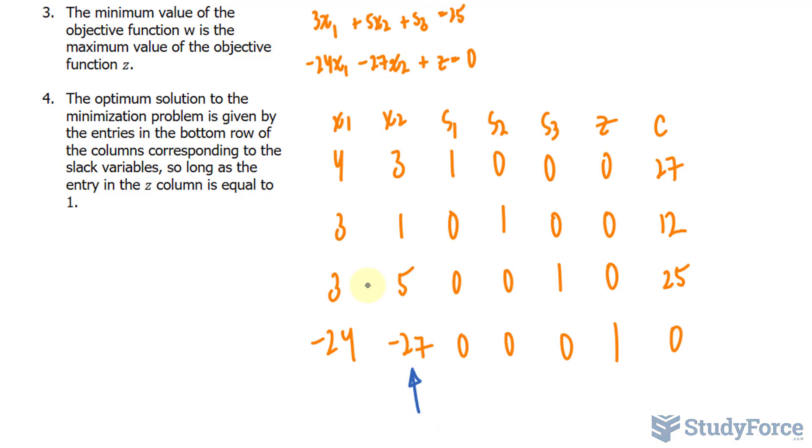This will serve as our pivot column, and we'll take the constant and divide it by that number in that row. 27 divided by 3 gives us a quotient of 9. So this column's for quotients: that's 9. 12 divided by 1 is 12. 25 divided by 5 is 5, and we don't worry about this one. The smallest number here is 5, therefore, this 5 is our pivot number. So row 3 will remain the way it is, but we need to make this 1, 3, and -27 into 0s using row matrix operations.